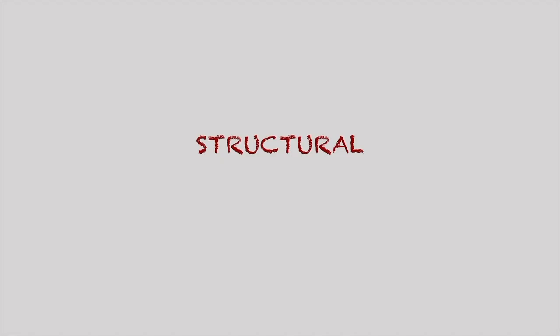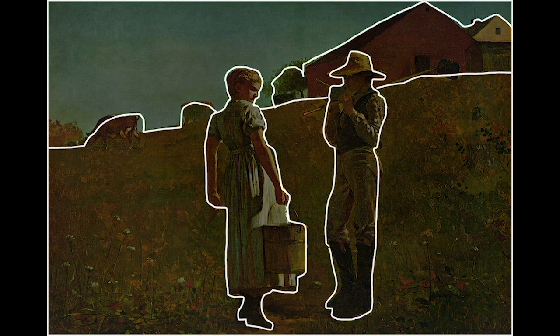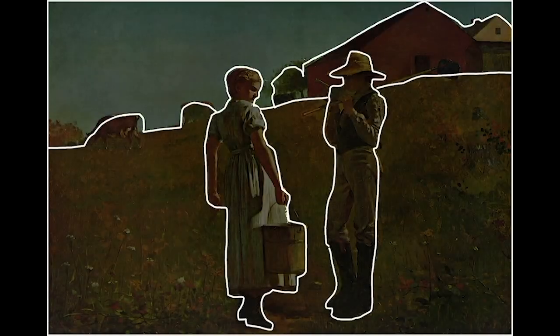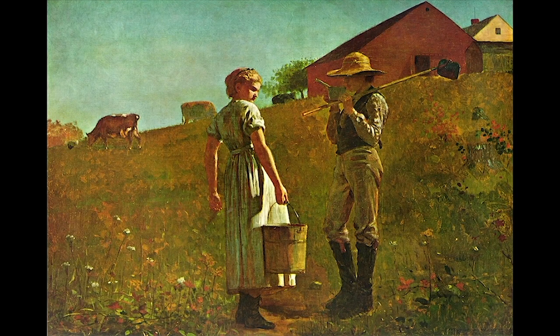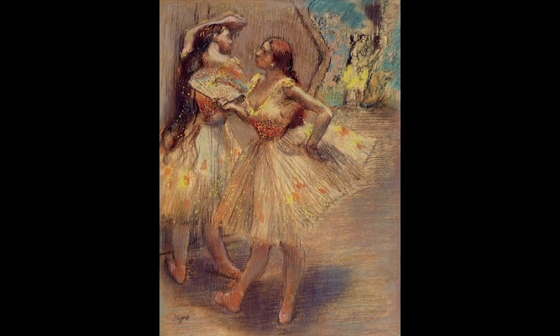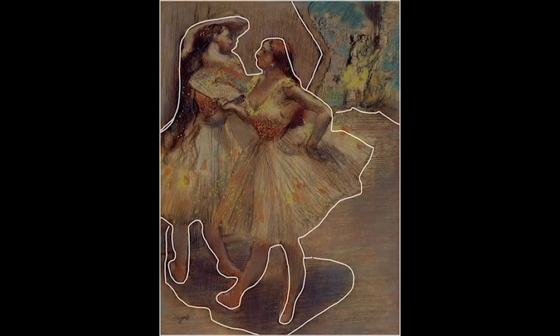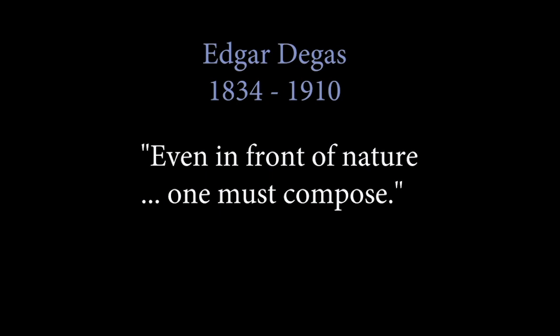A clear example of structural composition can be seen in this painting by Winslow Homer. Notice how the figures sit in space and the horizon crosses behind, connecting edge to edge. This painting by Edgar Degas from 1888 shows a strong structural composition. A quote from Degas says: even in front of nature, one must compose.